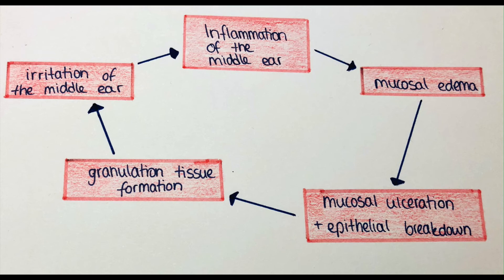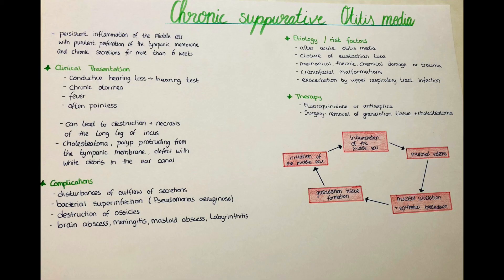I drew a scheme showing this whole process as a cycle of repeating events. Starting with irritation of the middle ear, this leads to inflammation of the middle ear — at this stage we still speak of acute otitis media — which can lead to mucosal edema. This edema can then lead to ulcerations and epithelial breakdown. As the inflammation persists, in an attempt to heal, granulation tissue is formed. The problem is that this granulation tissue again irritates the middle ear, bringing us back to the start of the cycle. It's a self-perpetuating process that usually doesn't resolve on its own and requires anti-inflammatory and antibacterial treatment.